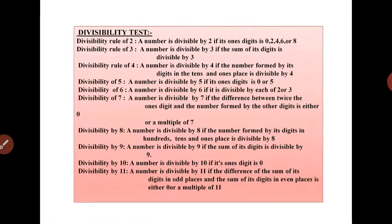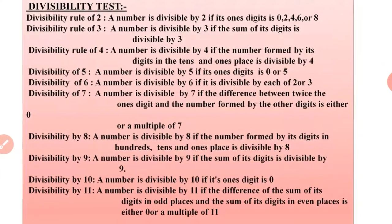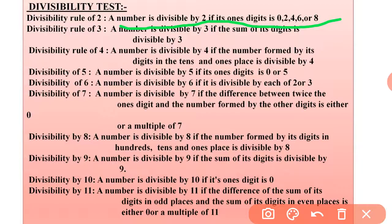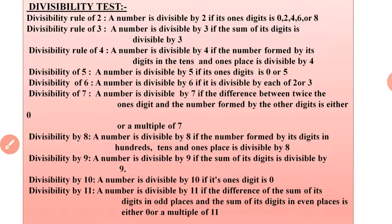Divisibility tests are also important — you must learn and write all of them. Divisibility by 2: a number is divisible by 2 if its ones digit is 0, 2, 4, 6, or 8. Divisibility by 3: a number is divisible by 3 if the sum of its digits is divisible by 3.